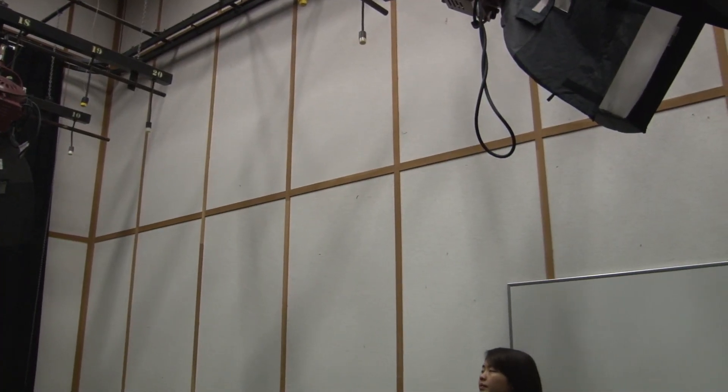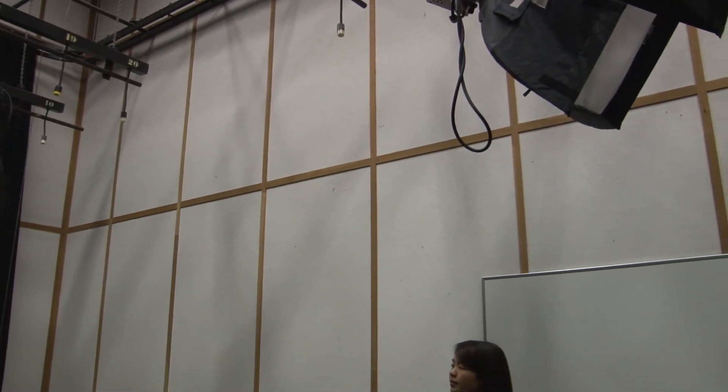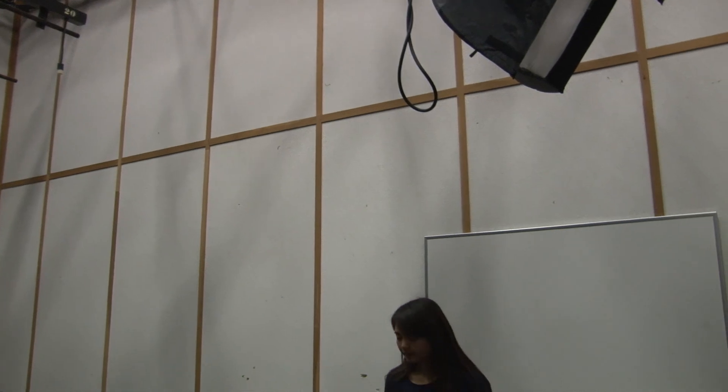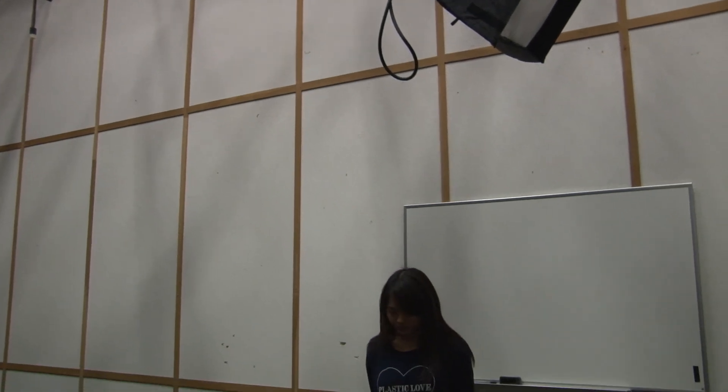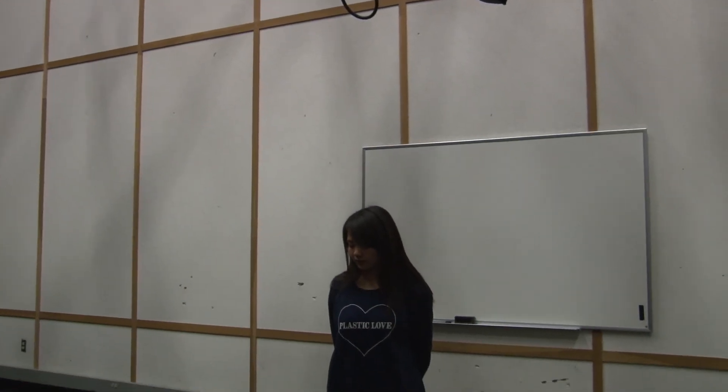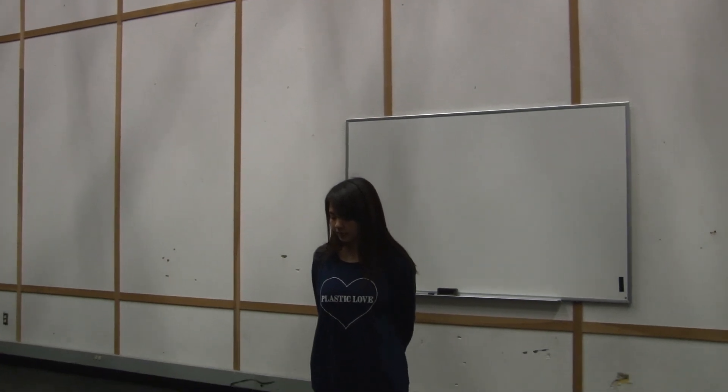Tilts refer to the up or down movement of the camera while the camera itself does not move. Tilts are often employed to reveal vertical objects like a building or a person.